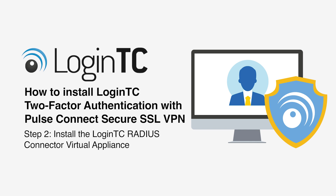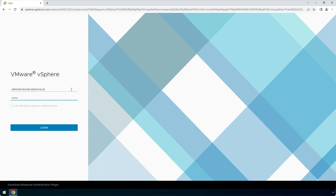Now install and configure the LoginTC Radius Connector appliance in your virtualization infrastructure. Virtual appliance images are available in OVA and VHD formats for both VMware ESXi and Hyper-V. You should first download the LoginTC Radius Connector virtual appliance image from the download section of our documentation website. See the video description for a list of relevant links. Login to your VMware ESXi console.